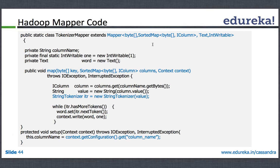This is your typical class for the mapper implementation. If you want to read data from Cassandra, column name information can also be supplied via config — this can be done by setting up the context when you set the job config information. In a setup method which gets invoked at the start of the mapper, you query the context, call get configuration, and get the column name. If column name is the property set at job config time, this is how you get its value and save the column name. Then you initiate the IntWritable and Text classes for your Hadoop output.